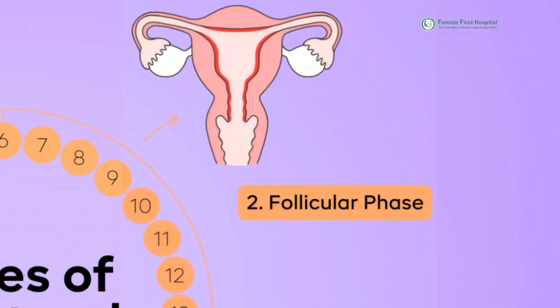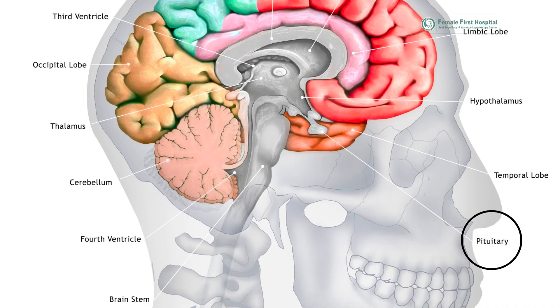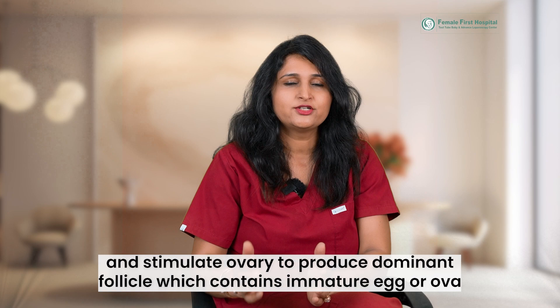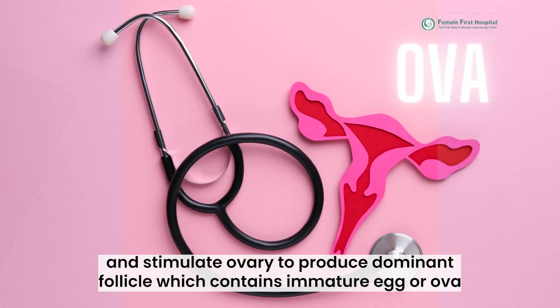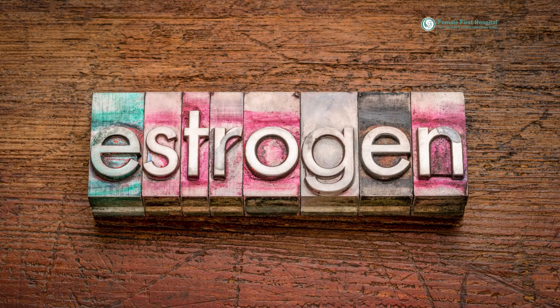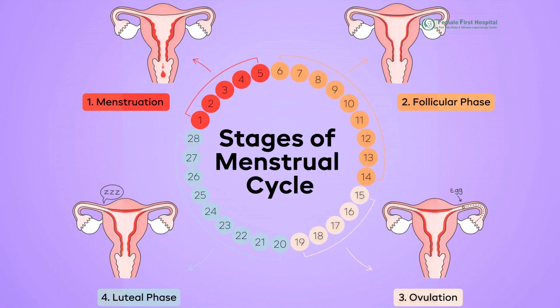The second is the follicular phase, lasting from days 1 to 13. Along with menstruation, the pituitary gland starts releasing follicle-stimulating hormone (FSH), stimulating the ovary to produce a dominant follicle containing an immature egg or ova. As the follicle grows, it releases estrogen, which increases the thickness of the uterine lining for potential implantation of the fertilized egg.